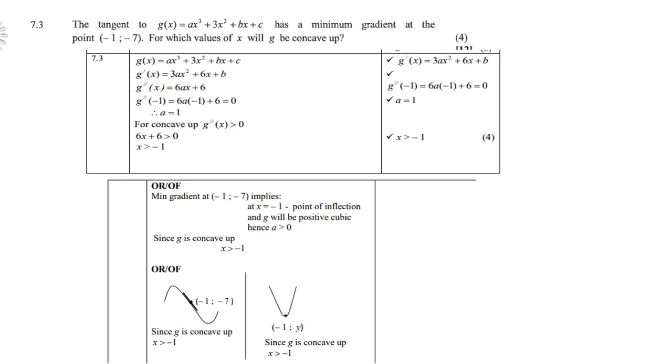7.3, the tangent to g(x) = ax³ + 3x² + bx + c has a minimum gradient at the point (-1, -7). For which values of x will g be concave up? So you substitute. First differentiate the equation. ax³ becomes 3ax², so you get 3ax² + 6x + b. So first, get the first derivative.